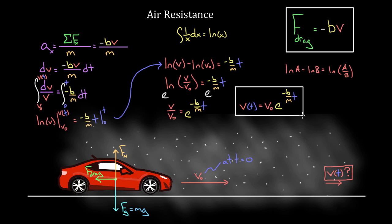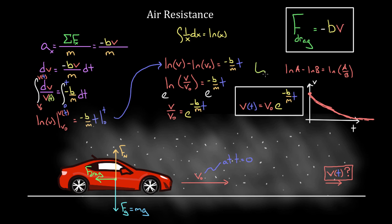This is the velocity of the car as a function of time, and it makes sense. If you graph it with time on the horizontal axis and velocity on the vertical, you start at v-naught and the curve dies out — it looks like a decaying exponential that asymptotes toward the t-axis. The car gets slower and slower, which makes sense as it moves through the air. To recap: set up using Newton's second law, separate variables to get all velocities on one side and times on the other, integrate both sides, and solve for velocity as a function of time.